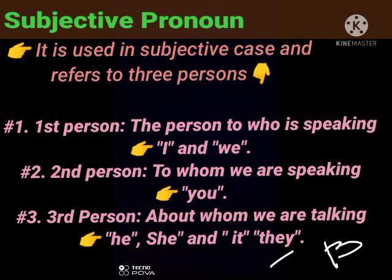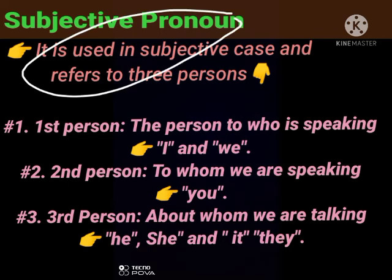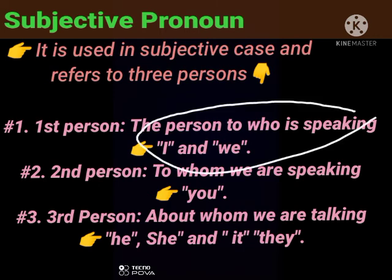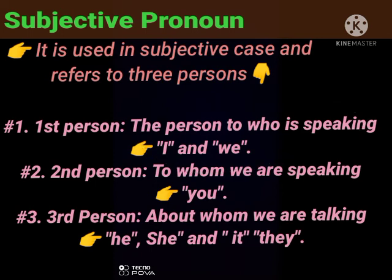Subjective pronoun — جو subjective pronoun ہوتی ہے، جو subject کی جگہ آتی ہے۔ اس کی تین person ہے، ٹھیک ہے۔ First person is the person who is speaking. Second person: to whom we are speaking.